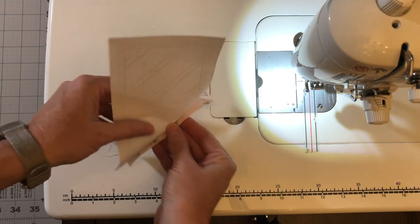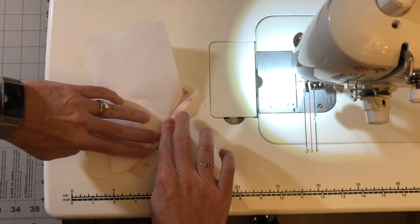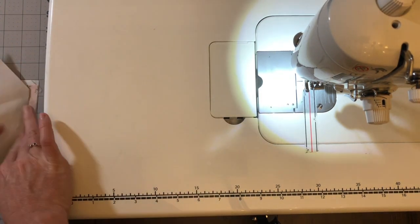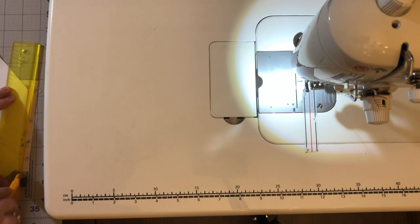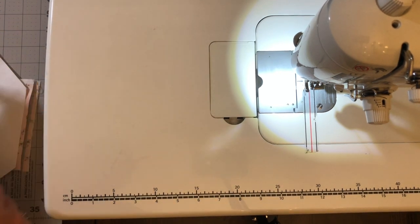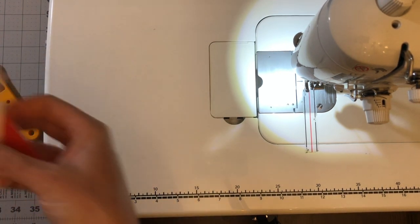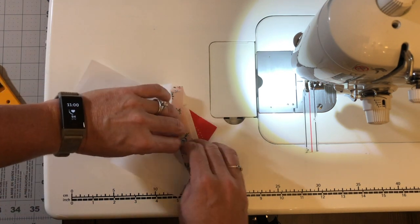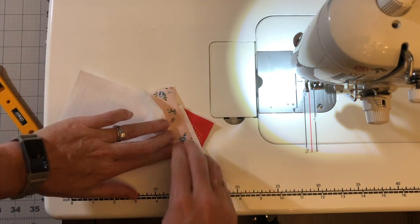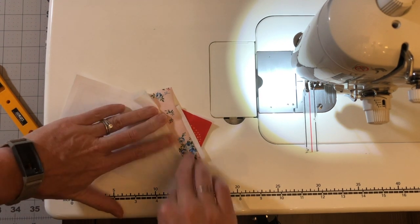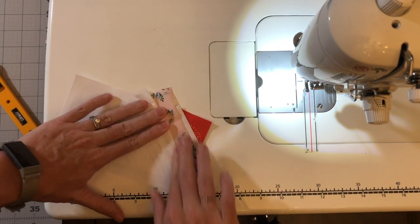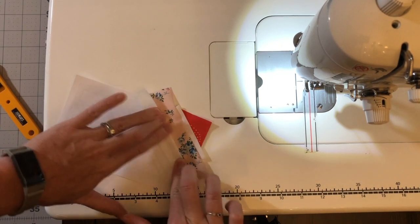But first, before I keep going, I'm going to trim this seam, trim it to a quarter inch. I had someone ask me in a paper piecing class that I taught one time, like, do you even really need to bother trimming the seams? I mean, it's all going to come together, right? And that's true. But if you don't trim those seams down to a quarter inch, like you're just going to be building up a lot of fabric bulk there.